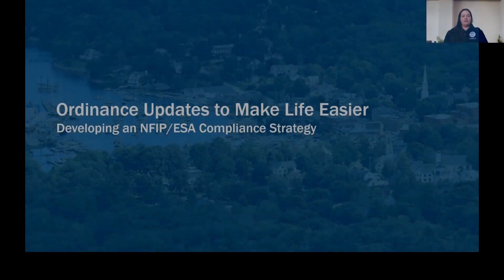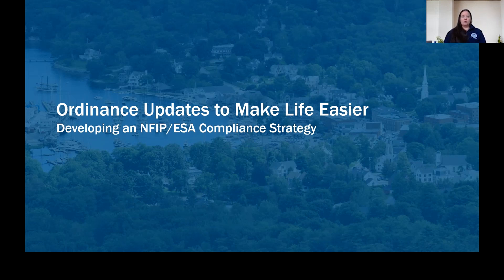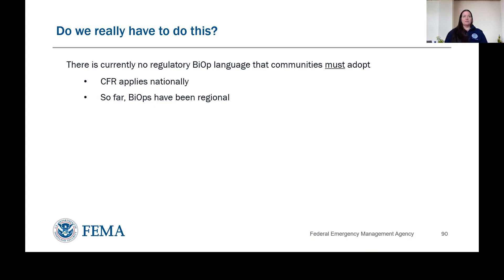Hello, we are going to start now the fifth module of our ESA-NFIP integration training series. This module will focus on ordinance updates to make life easier, developing an NFIP-ESA compliance strategy. In the previous module, we talked about habitat assessments and the kind of analysis that need to be part of applications and your review of that analysis being essential to making permitting decisions — to make sure that any floodplain development in your special flood hazard area is compliant with the ESA requirements in the biological opinion for Puget Sound. We're going to start going into what kind of tools communities can develop to help them meet these requirements more easily.